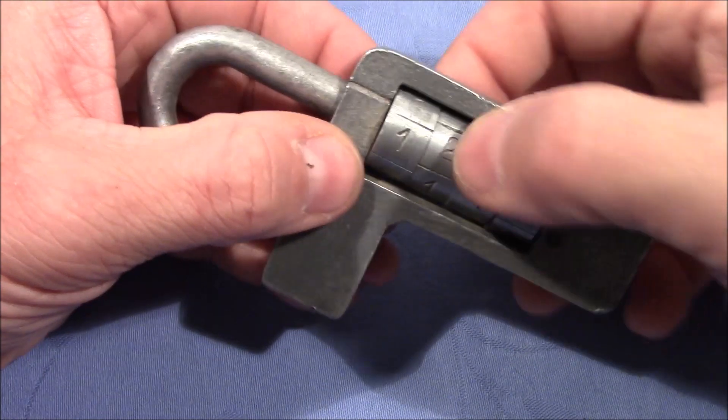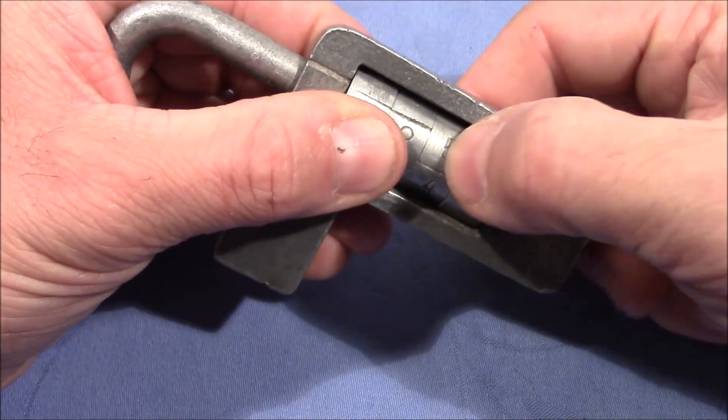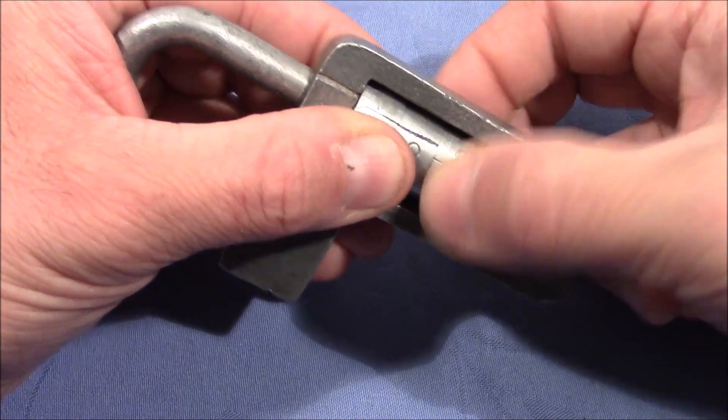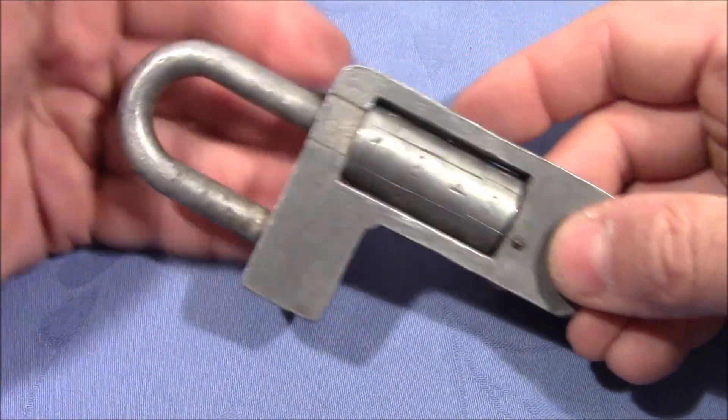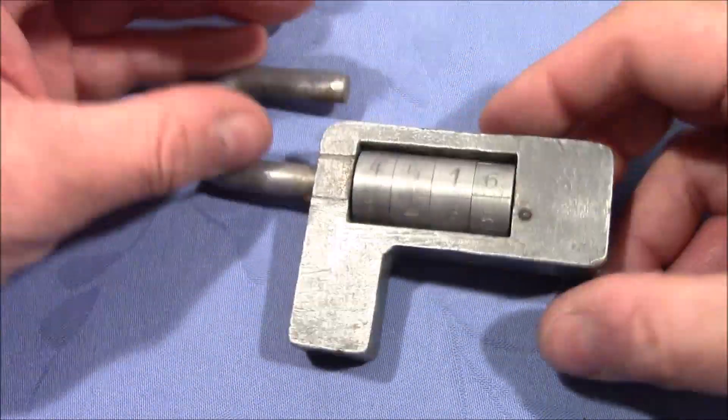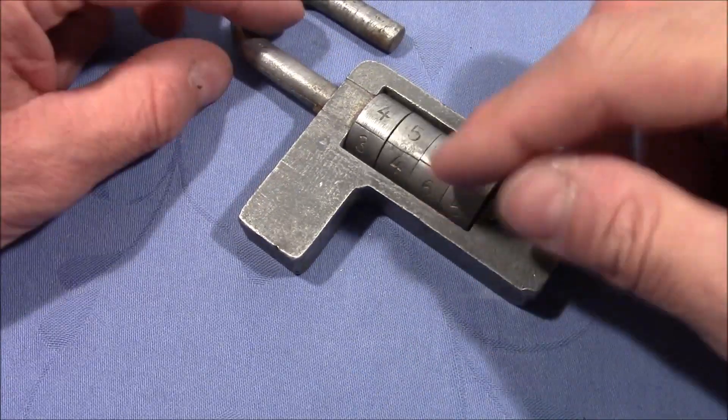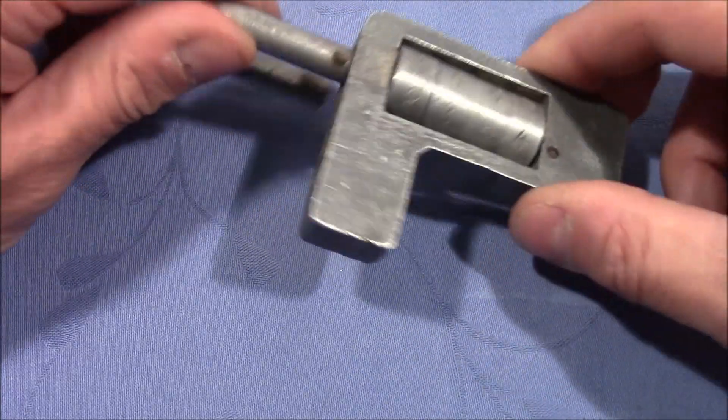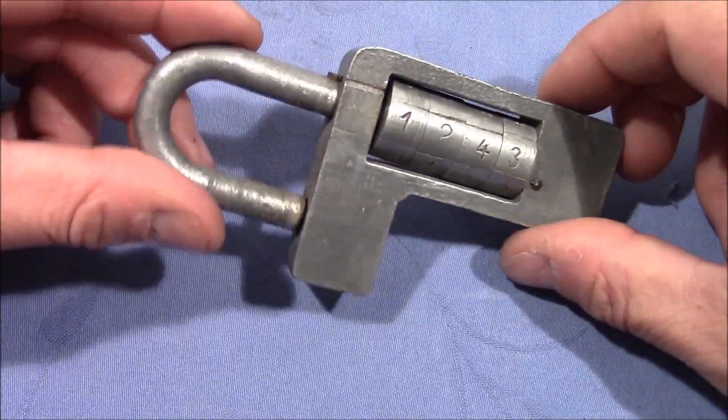Then I hold both wheels and turn the third wheel and it stops here, and it has decoded itself again. So the last number you really need to try out because it's already magically set to the right number.